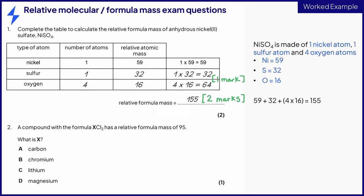In the second question, XCl2 contains one atom of X and two atoms of chlorine. Again, remember that the little number 2 belongs to the element before it. From the periodic table, chlorine atoms have a mass of 35.5. So X is 95 minus 2 times 35.5, which gives an answer of 24. The element with a mass of 24 on the periodic table is magnesium. This answer gains one mark.